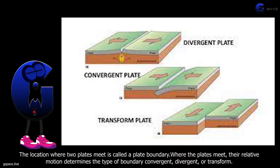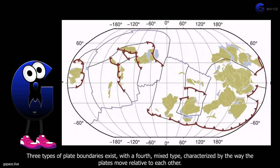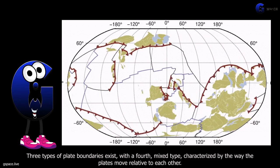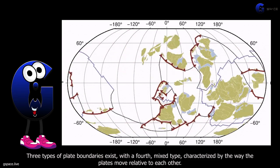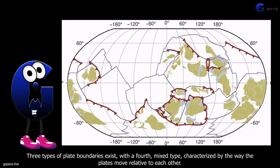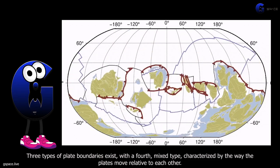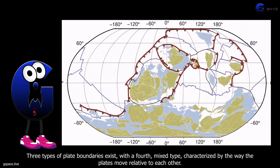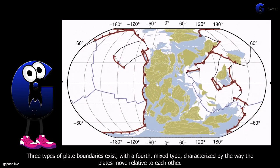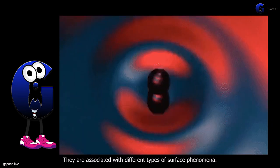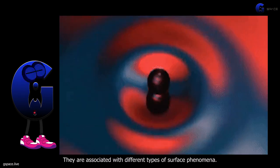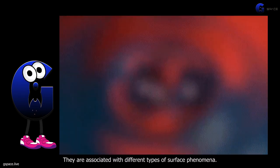Three types of plate boundaries exist — convergent, divergent, or transform — with a fourth mixed type, characterized by the way the plates move relative to each other. They are associated with different types of surface phenomena.